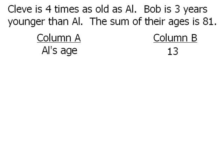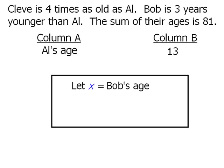Okay, since Bob is the youngest person here, let's let x equal Bob's age. Now we're told that Al is three years older than Bob, so that means that Al's age is equal to x plus three. And finally we're told that Cleve is four times as old as Al.